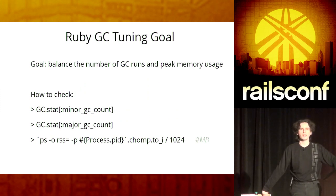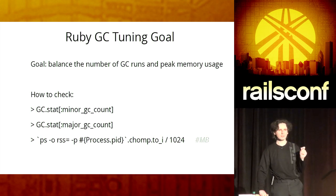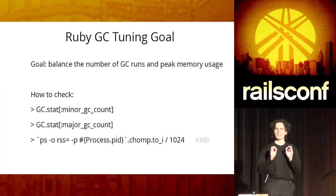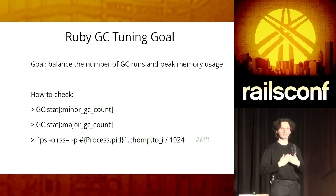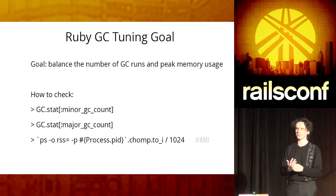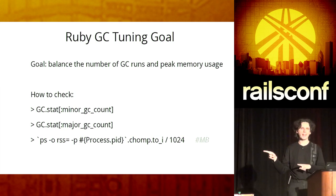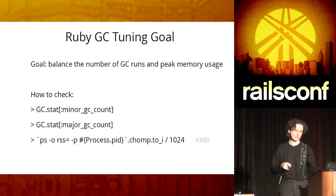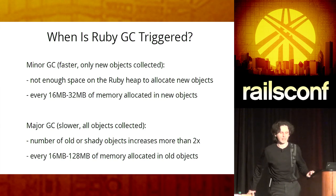What do you want to check? You want to change the settings to shift the balance between the number of times GC runs and peak memory usage. By default, Ruby wants you to have low peak memory usage and a high number of GC calls. So if you want to reduce the number of GC calls, you need to sacrifice peak memory usage. You need to measure to see how well it works for your application.